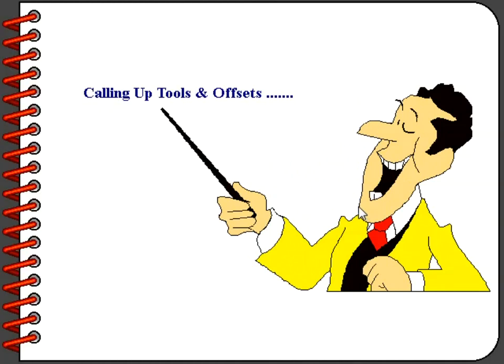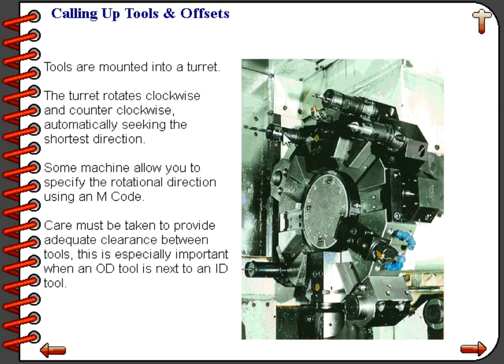Let's take a look at how we can call up tools and work with offsets. Most CNC turning centers utilize a turret for mounting the tools. A turret is a large disk with a means of fastening the tools to it; the turret rotates clockwise and counterclockwise. The machine itself will decide which is the fastest way to get the tool into the cutting position. On some machines they allow you to program which rotation you would like to use, often times done using a special M code.